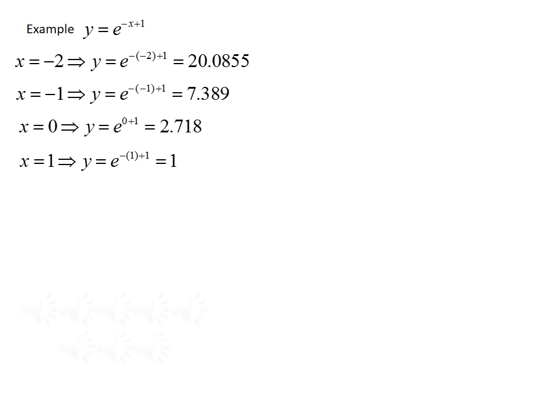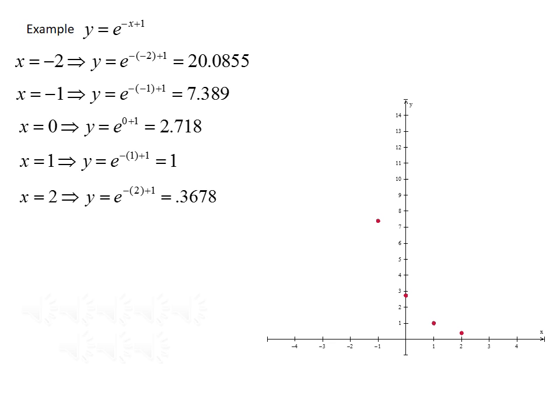When x equals 1, we get y equals e to the minus 1 plus 1, which gives us e to the 0, which is just 1. And if x equals 2, we get y equals e to the negative 2 plus 1, which simplifies to e to the minus 1, giving us 0.3678. Now that we've found several points, we can plot those on a graph and connect the dots, and the graph of y equals e to the minus x plus 1 looks something like this.